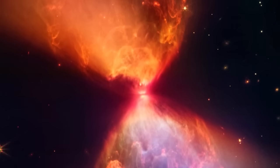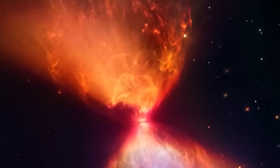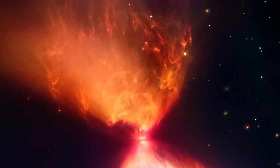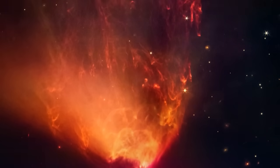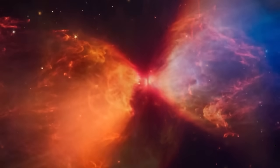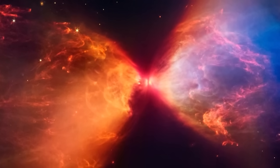The hourglass is formed by the ejection of material from the forming star. As the material moves away from the protostar, it collides with the surrounding material and creates cavities.